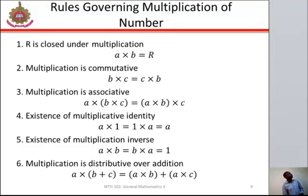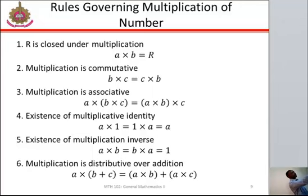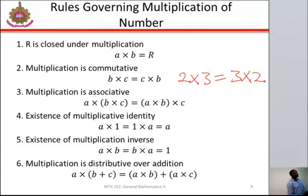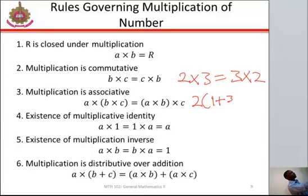Then there are rules governing multiplication of numbers. R is closed under multiplication — the product of any two real numbers is a real number. The second rule is that multiplication is commutative — that is, when you have 2 times 3, you should get the same value as 3 times 2. The third rule is multiplication is associative — that is, when you open brackets of some numbers, you should get the same answer.